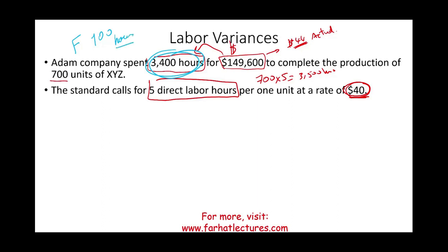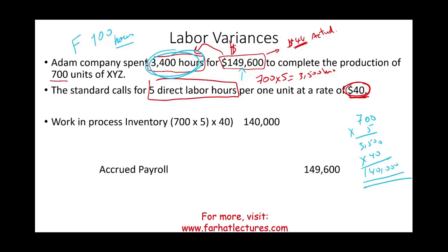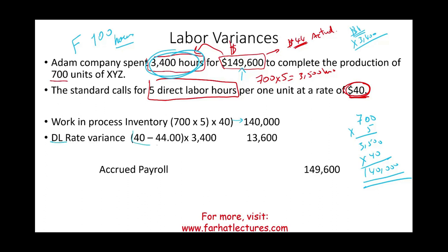For the journal entry, credit accrued payroll $149,600. Debit work in process at the standard: 700 units × 5 hours × $40 = $140,000. The rate variance: we paid $4 extra per hour over 3,400 actual hours = $13,600 unfavorable direct labor rate variance, recorded as a debit.